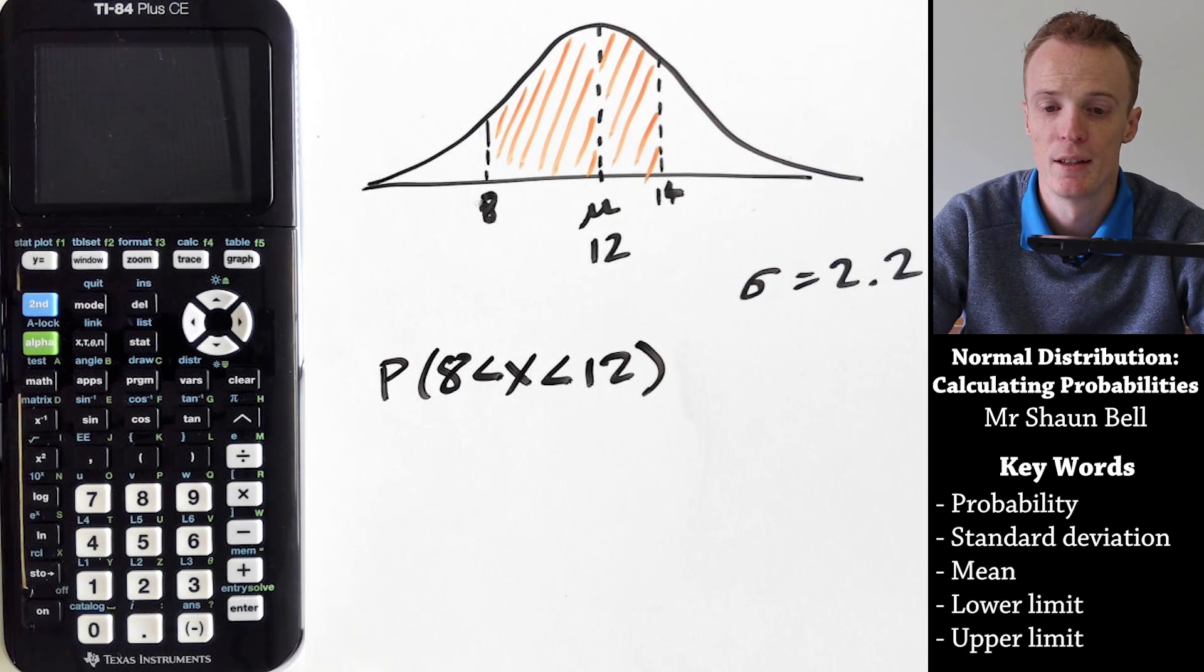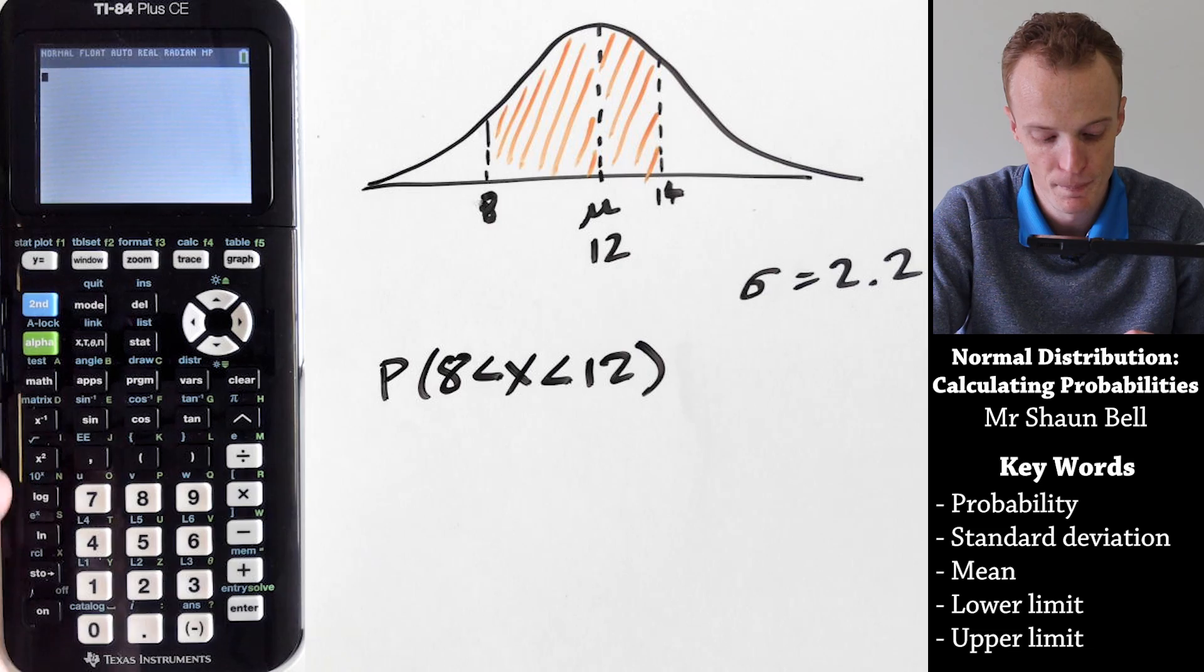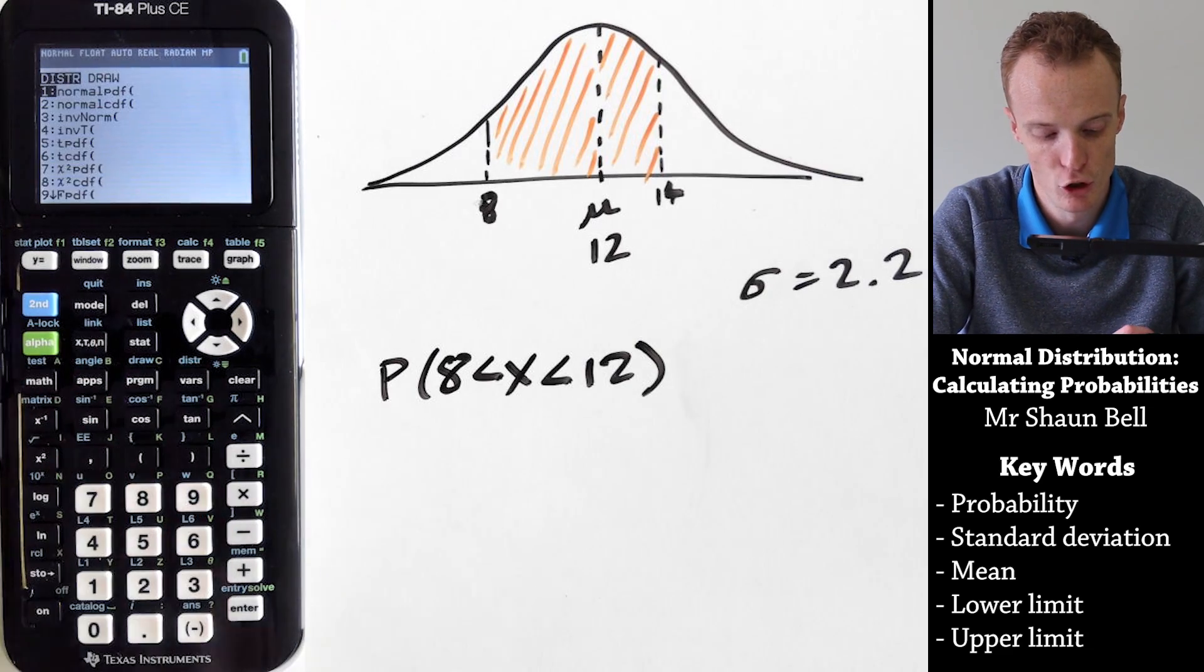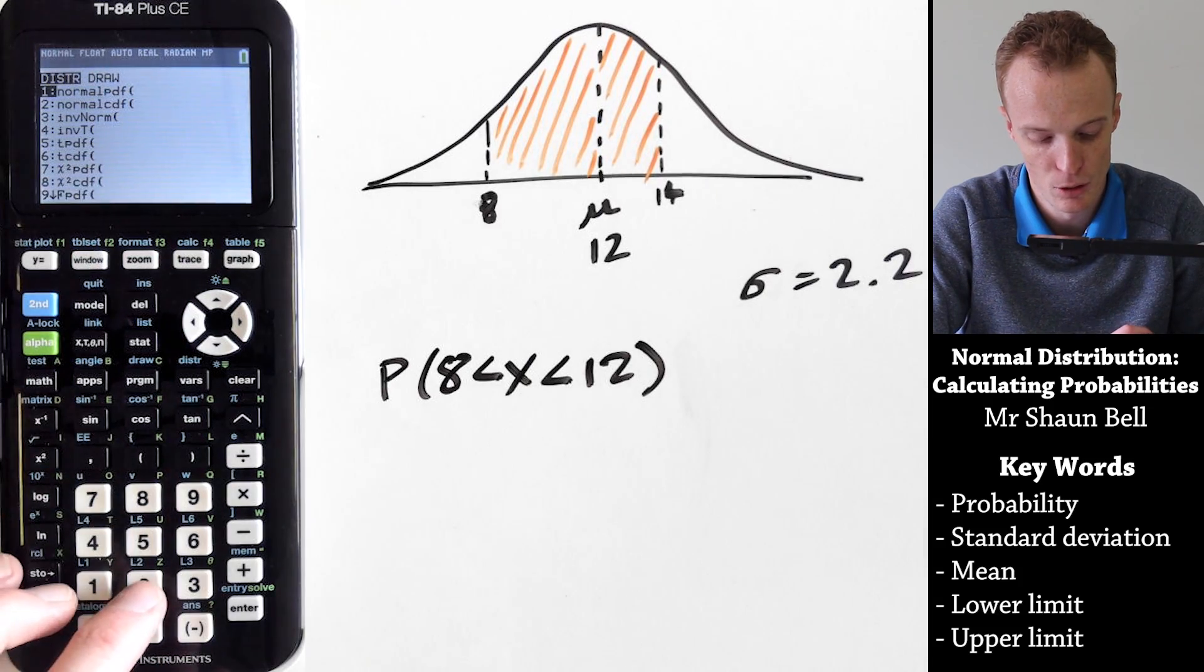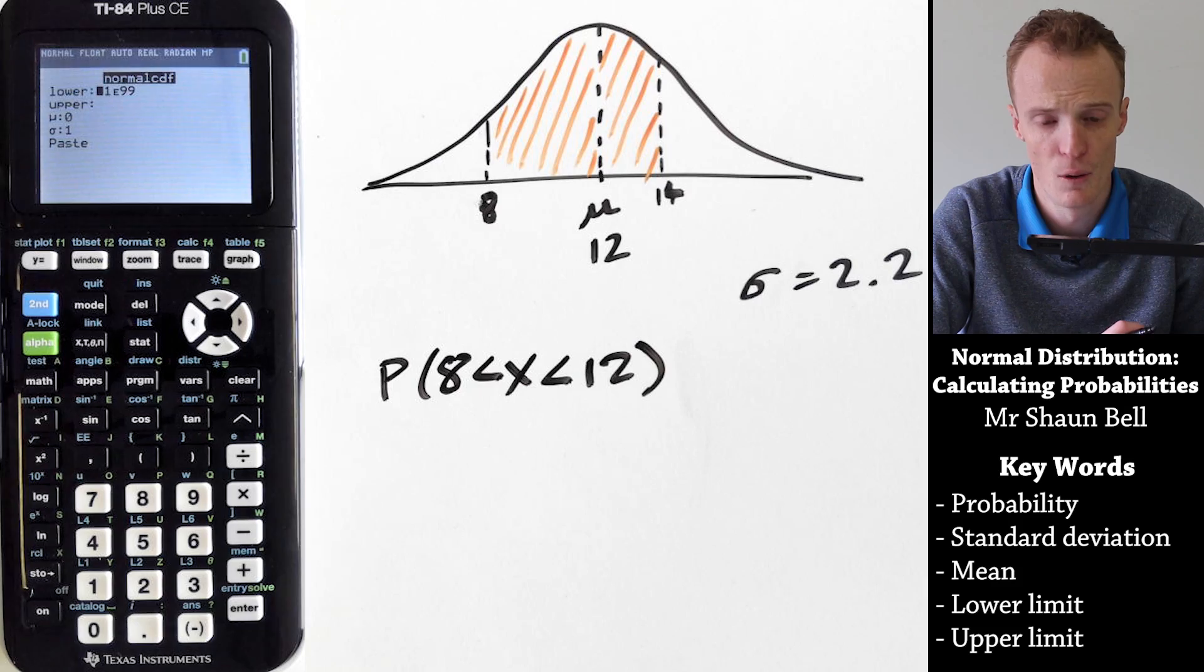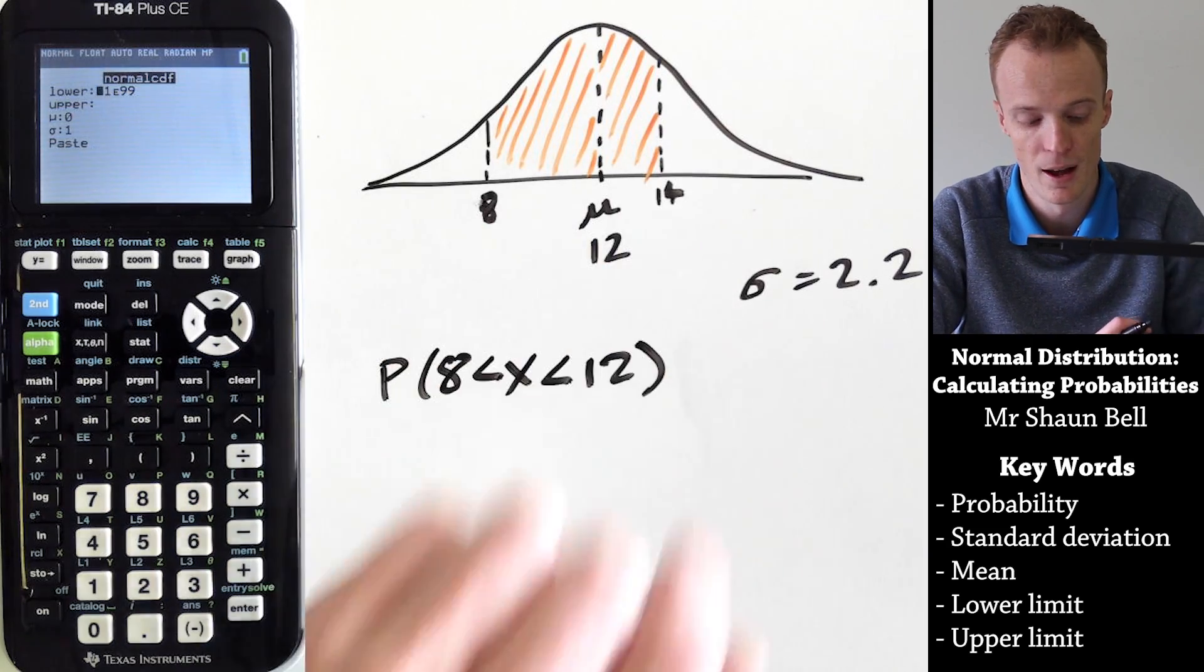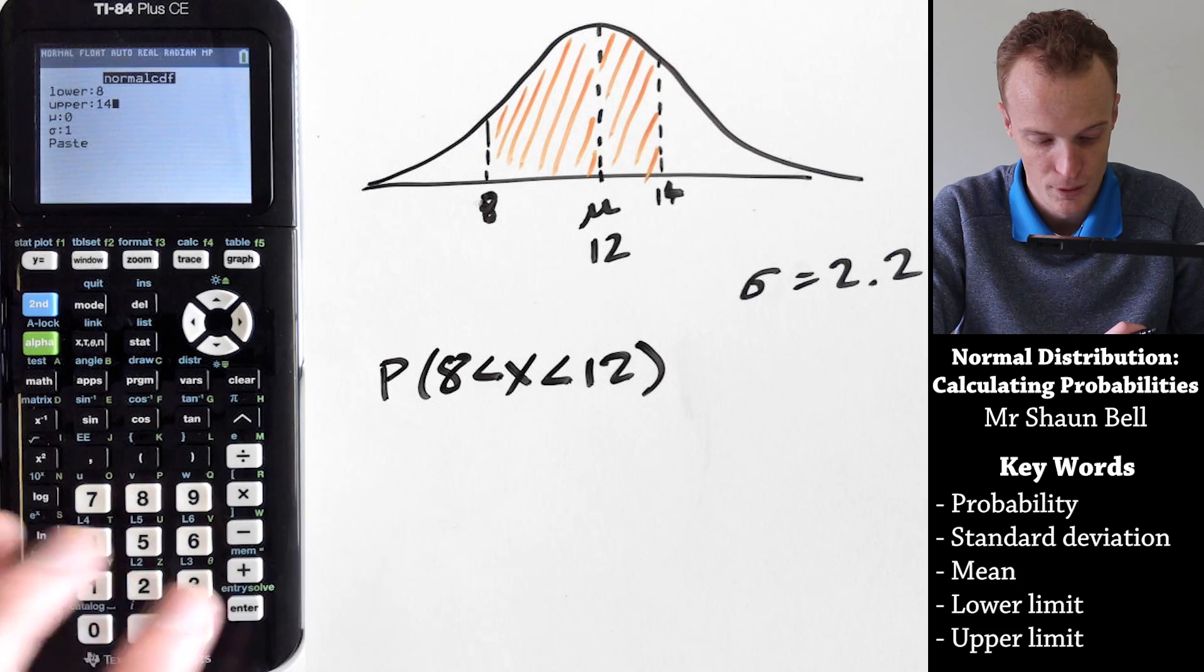Alright, so let's now enter this into our calculator. To do that, just make sure your calculator is on and we want to go to the distribution section, which is above the vars button. So we go to second distribution, and the one that we want is normal cdf, which is option 2. So you can scroll down and press enter, and it'll ask us for the lower and upper bound. The lower and upper bound is represented in here, this one being our lower, this one being our upper. So our lower is 8, our upper is 14.